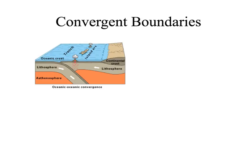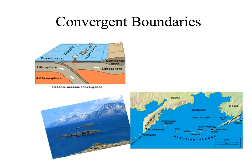Our next type is convergent boundaries, of which there are three types. The first is oceanic-oceanic, when two ocean crusts come together and one subducts under the other. The subducting crust is made of basalt, gets hot, melts, and rises to the surface, creating volcanoes that form island arcs. A trench also forms where the crust bends going under. The Aleutian Islands, running to the west of Alaska, are an example of oceanic-oceanic convergence, forming that arch of islands.